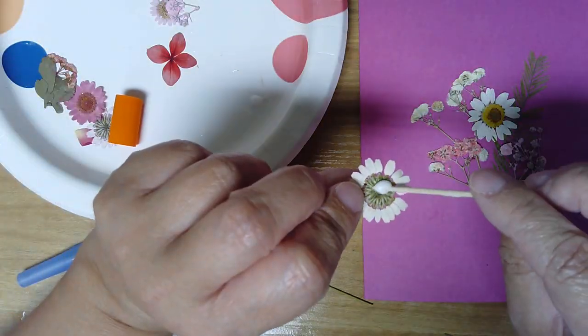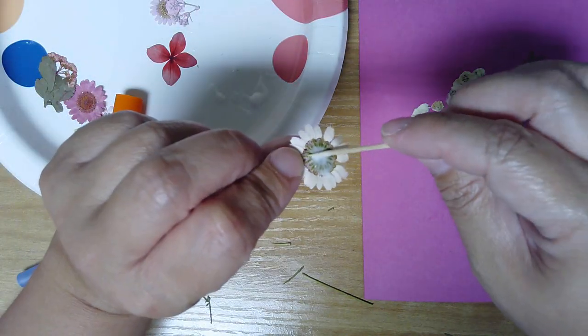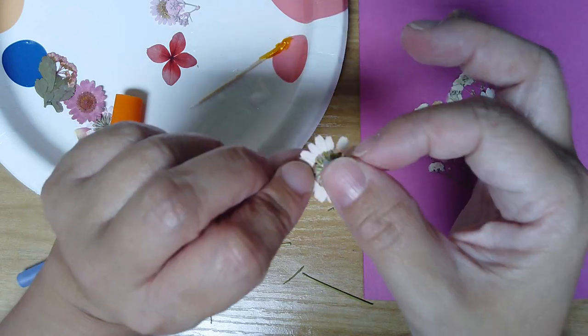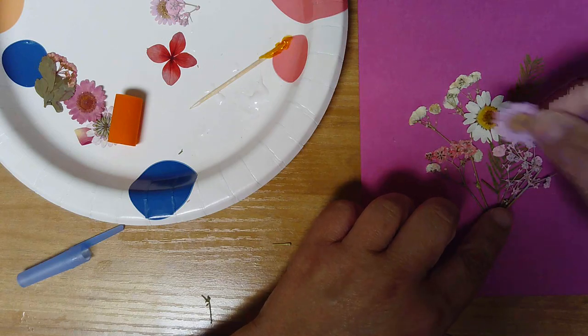And same for this one, just on the back. And make sure you don't put so much in the center that when you press it down on the card, it squirts out and goes to where the petals are, because again, you'll see it.